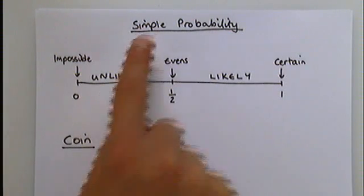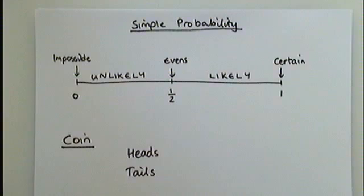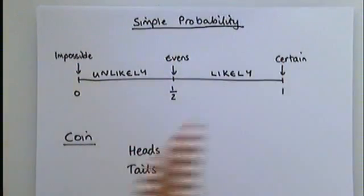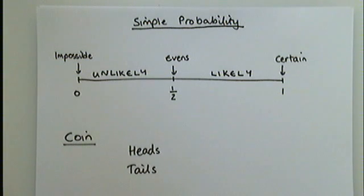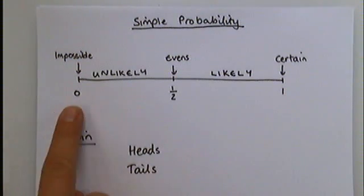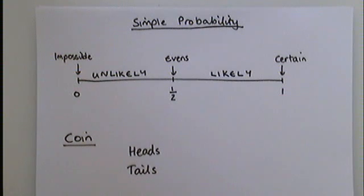In this video, we're going to look at simple probability. We're going to look at, in particular, using the language of probability, also working out some simple numbers associated with probability. And we're also going to look at how you can mark those numbers onto the probability scale to show how likely something is to happen.